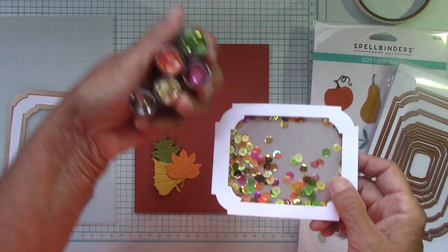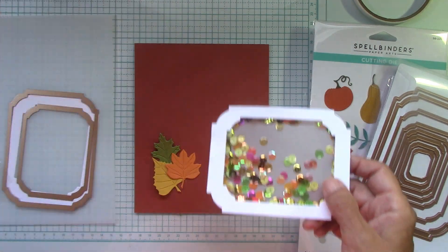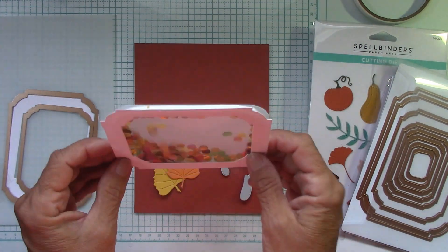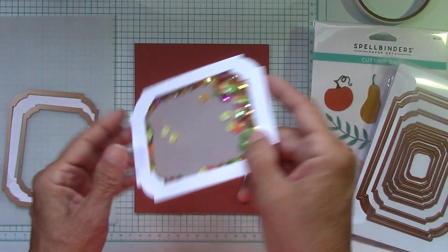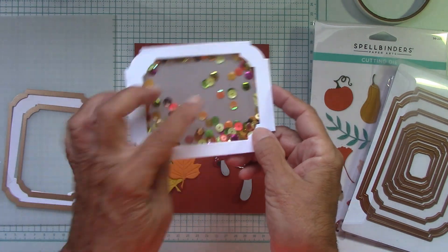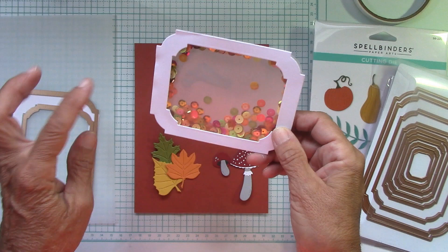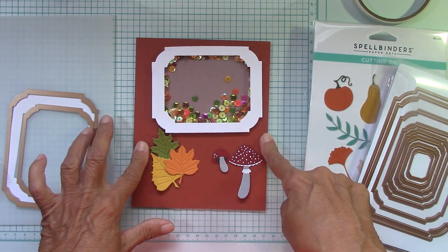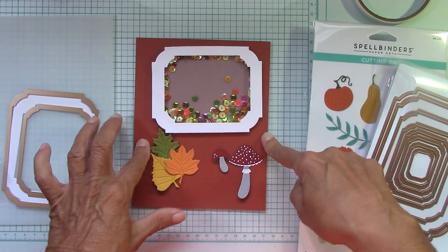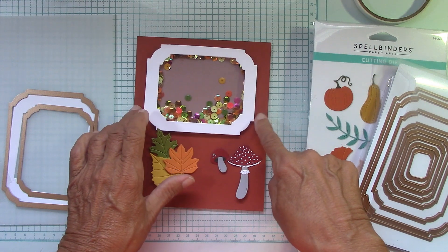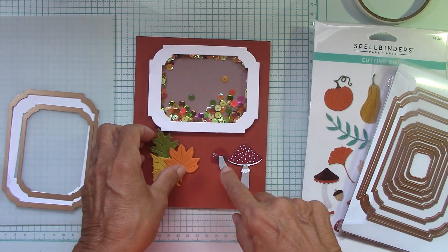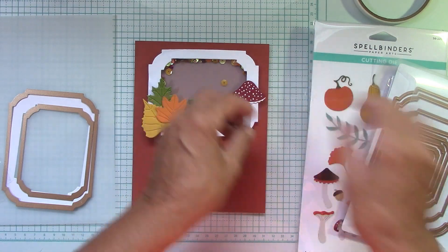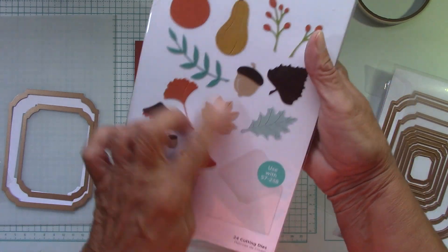Look at that. These are just sequins I had in my stash, probably from 10 years ago. They really came out cute. I would put more in it because as much as I try to get it not to stick to the side, they do stick to the side, which makes it really cool. It frames it out.